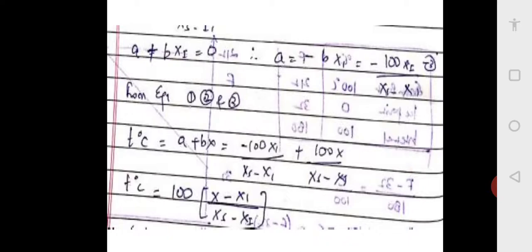Now substituting this value of b back into the ice point equation: 0 is equal to a plus b·x_i, so a is equal to minus b·x_i. Substituting the value of b, which is 100 divided by x_s minus x_i, we get a equals minus 100 divided by x_s minus x_i, entire thing multiplied by x_i.